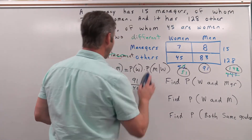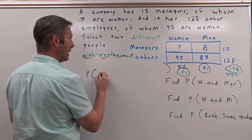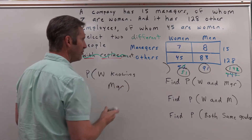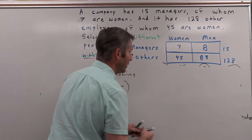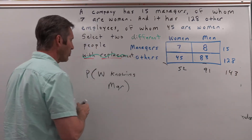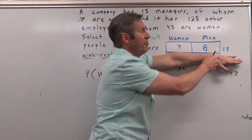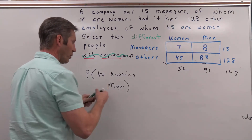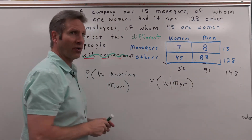We'll get more into conditional probability, but basically: what's the probability that you get a woman knowing that the person selected was a manager? Instead of using a complex formula, all we do is shrink the sample space. Originally we had 52 women and 91 men for a total of 143 people. Now, knowing a manager was selected, we shrink down to only 15 managers — and 7 of them are women. So the probability is 7 out of 15.